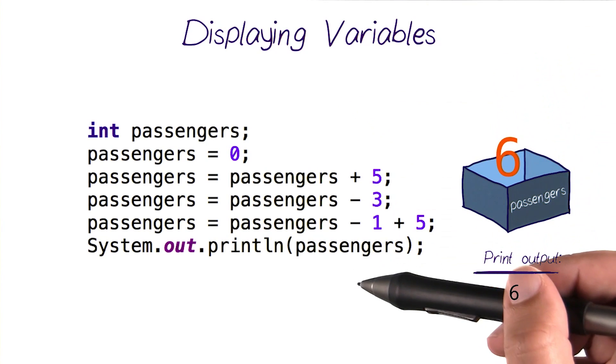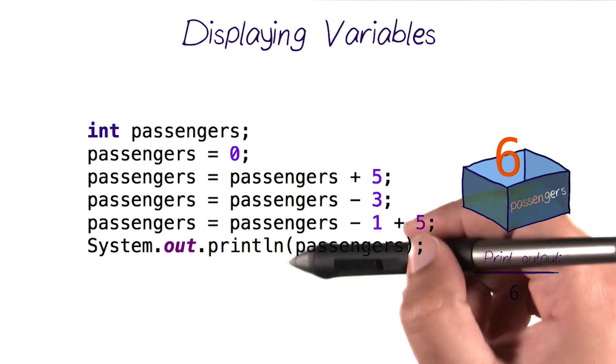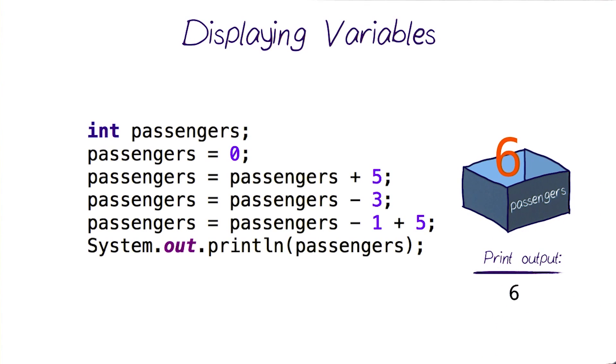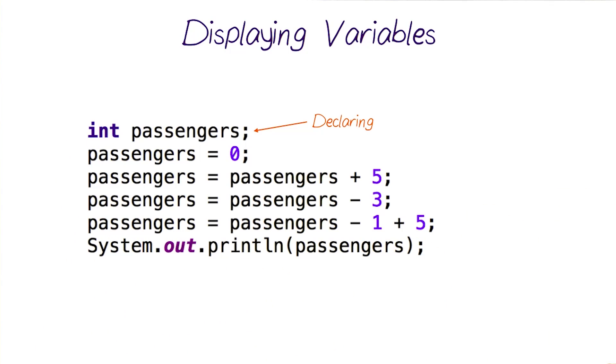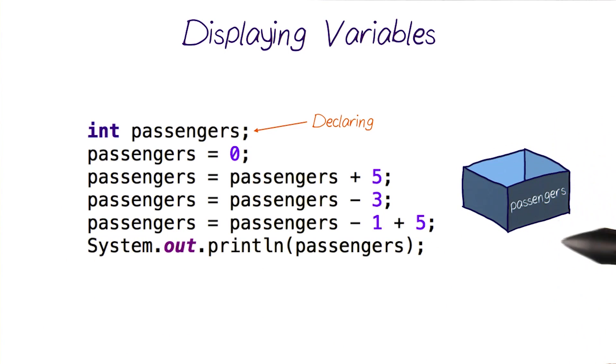Let's trace this program step by step, and see why the variable passengers ended up with 6 inside. This statement here is declaring this variable passengers of type integer, which is basically creating this empty box that we can store integer variables in it.